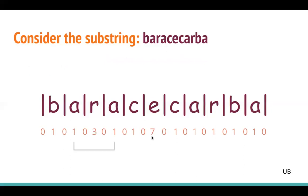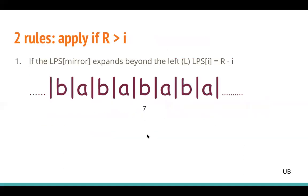Looking at the resulting LPS array, you can see the pattern: 1, 0, 3, 0, 1 — and the same pattern appears again. This is called the symmetric property of palindromes, and Manacher's algorithm uses this property.